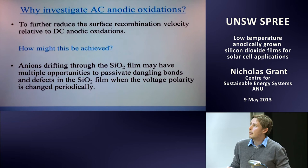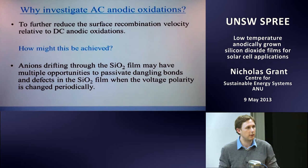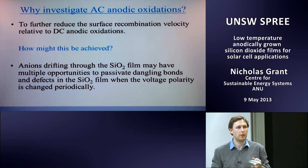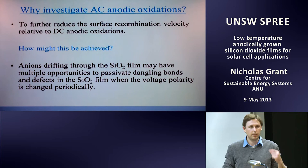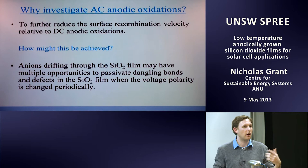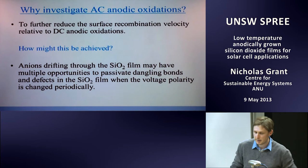Now let's look at alternating current anodic oxidations — can we reduce surface recombination further? When a periodic signal varying between plus and minus some voltage is applied, anions drift back and forth across the growing oxide. In doing so they possibly take paths of lower resistance — leaky paths — and have a higher chance of passivating defects in the oxide as they move back and forth.